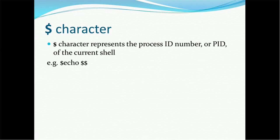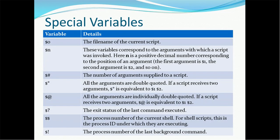The dollar dollar character represents the PID. Dollar zero is the file name of the current script. Dollar N (where N is a positive decimal number) corresponds to the position of an argument — the first argument is dollar one, the second argument is dollar two, and so on. Dollar hash gives us the number of arguments supplied to the script, so we can iterate over those variables and use them in our script.